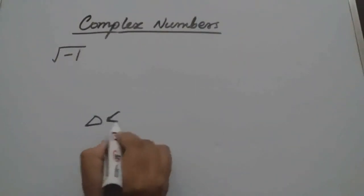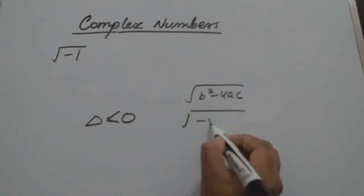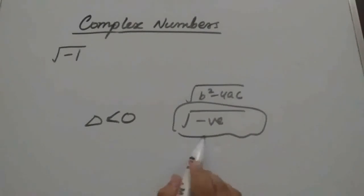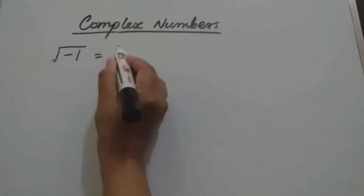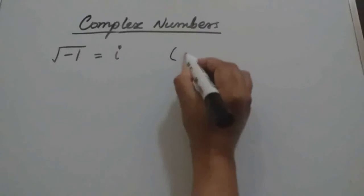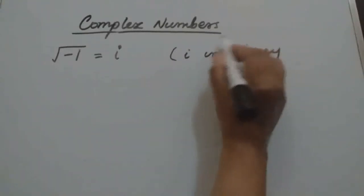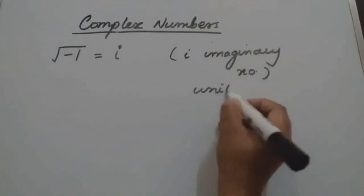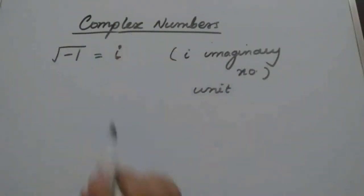Delta value less than 0 means root of b square minus 4ac is a negative value. Till now we studied that the root of a negative number does not exist. But after that, they proposed that root of minus 1 is i, where i is an imaginary number — specifically called the unit imaginary number because the coefficient is 1.